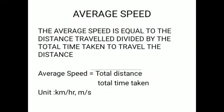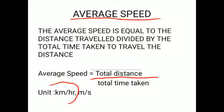There is another unit which measures average speed. Average speed is equal to the total distance traveled divided by the total time taken to travel that distance. The formula is: total distance divided by total time taken. When we measure average speed, we also use bigger units such as kilometers per hour and meters per second.